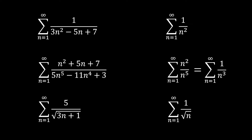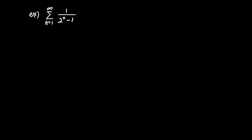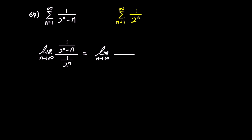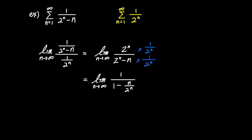Once we've found the second series, we can use the limit comparison test to determine whether the infinite sum converges or diverges. Here we have the infinite sum of 1 over 2 to the power of n minus n as our first problem. We'll take only the highest powers from the numerator and denominator to use the infinite sum of 1 over 2 to the power of n as our second comparison series. Now let's find the limit of the ratio of these two sequences. As n approaches infinity, the limit of (1 over 2 to the power of n minus n) over (1 over 2 to the power of n) simplifies to the limit of 2 to the power of n over 2 to the power of n minus n. By multiplying 1 over 2 to the power of n to both the numerator and denominator, we simplify to the limit of 1 over 1 minus n over 2 to the power of n. As n approaches infinity, n over 2 to the power of n approaches 0, so this limit becomes 1.